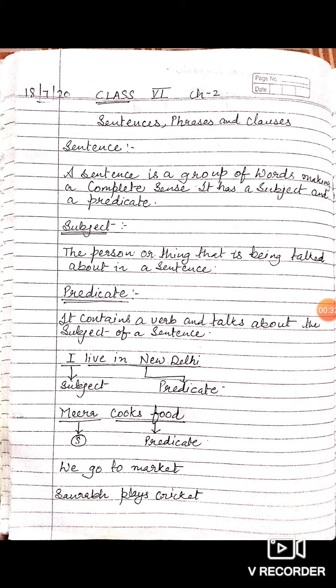Let's talk about what exactly a subject is. A subject is the person or the thing that is being talked about in a sentence. Jiske baare mein baat ki jaye toh woh hota hai subject. And predicate kya hota hai? A predicate contains a verb and talks about the subject of a sentence. Ismein verb hota hai aur woh subject ke baare mein baat karta hai.